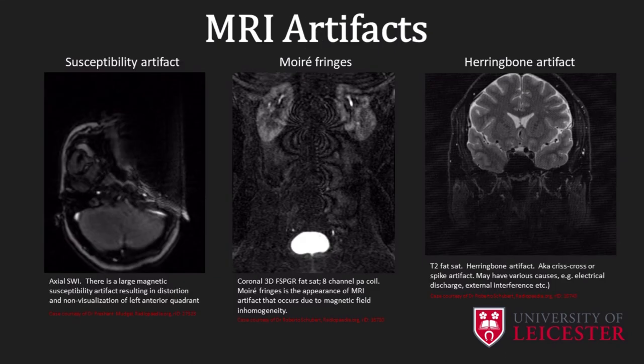Artifacts are features in the image that do not represent the actual physical reality. There are many MRI artifacts and understanding the physics related to image acquisition helps to understand how best to eliminate or reduce them. Image noise is the most common type of artifact, but there are other types, for example susceptibility artifacts, Moiré fringes, and herringbone artifacts. There are many, many MRI artifacts and we're not going to be able to cover all the different types.